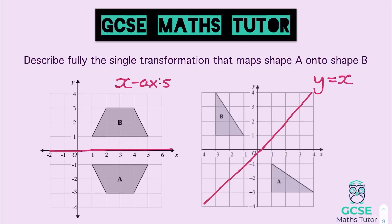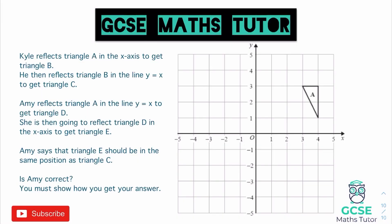We've got one final question. Kyle reflects triangle A in the x-axis to get triangle B, then reflects triangle B in the line y equals x to get triangle C. Amy reflects triangle A in the line y equals x to get triangle D, then reflects triangle D in the x-axis to get triangle E. Amy says that triangle E should be in the same position as triangle C — meaning they both do these two reflections and should land in the same position. Is Amy correct? You must show how you get your answer.